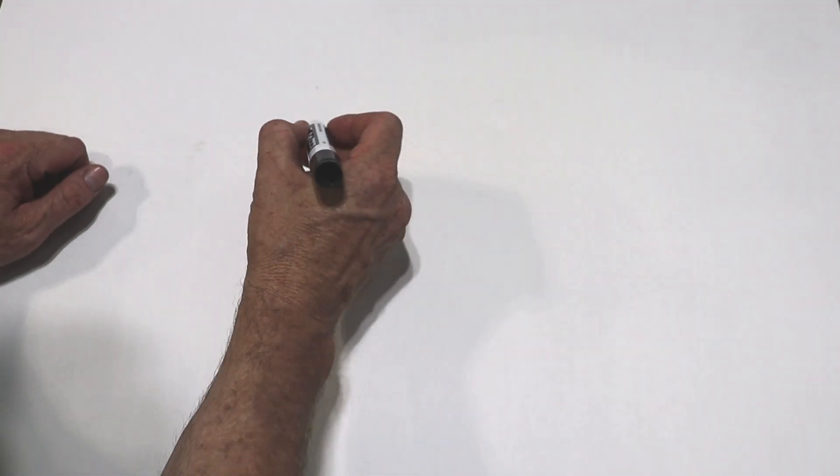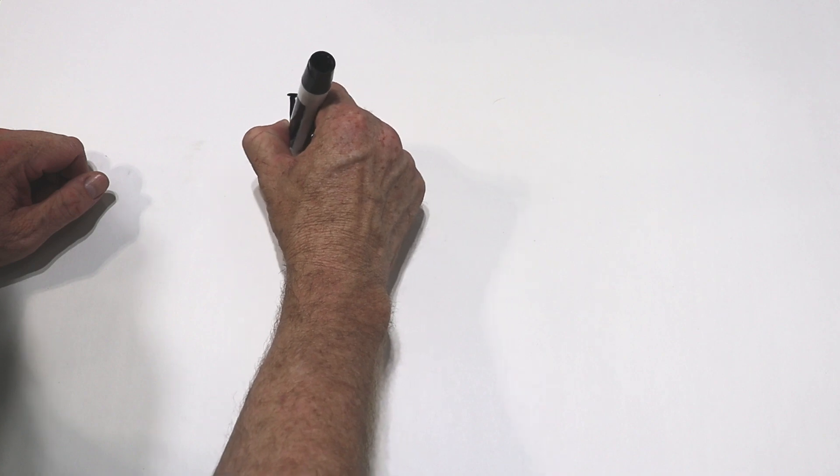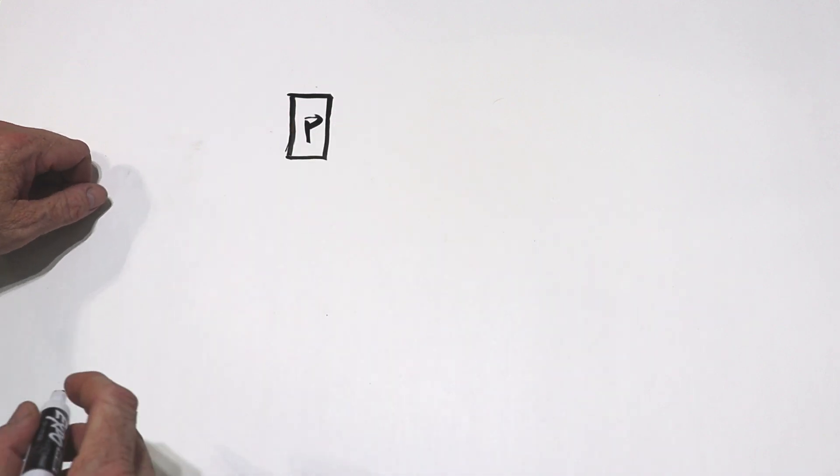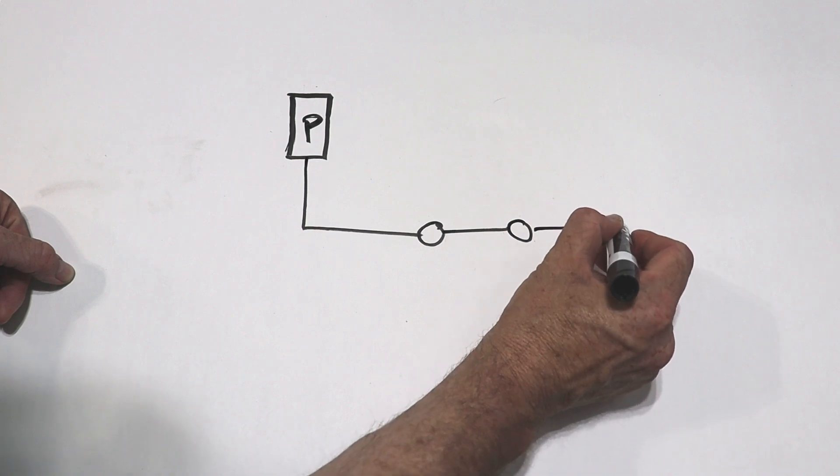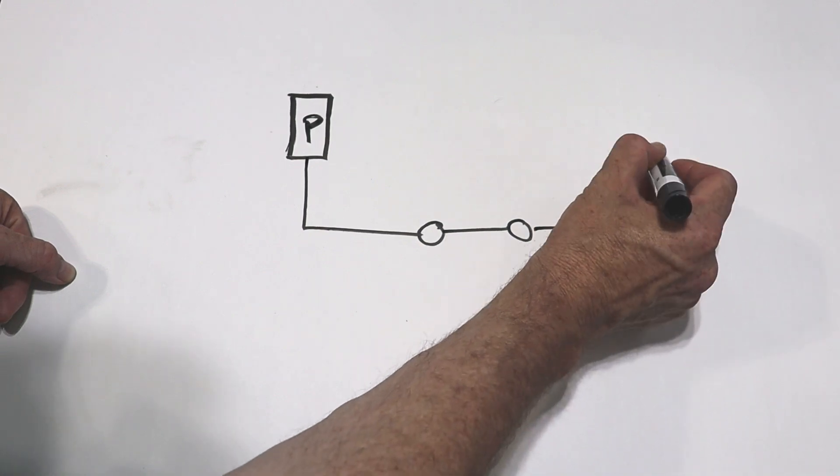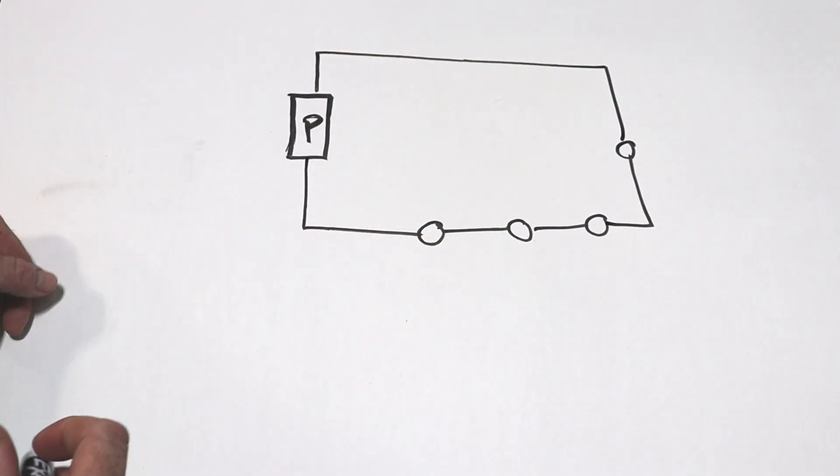So if we look at a series circuit, what you have is a power source, and you have a device, a device, maybe these are lights or something else, and your circuit returns to the power source.